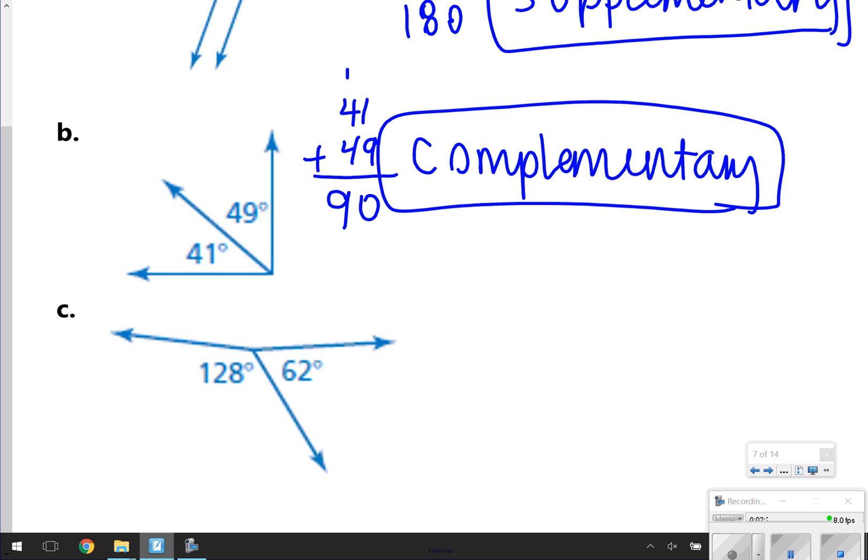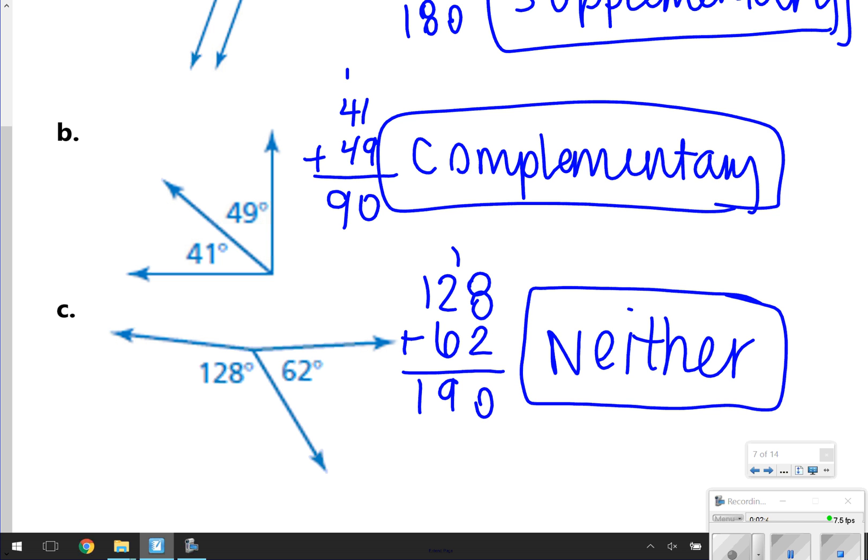For letter C, though, you can already tell that it's not a straight line. But for the sake of double-checking in math, 128 adding 62, I get 190. So that would be considered Neither, because it is neither a Complementary 90 degree or Supplementary 180 degrees.